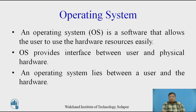An operating system is a software that allows the user to use the hardware resources easily. The hardware resources means the different input and output devices like the keyboard, the printer, and all other similar hardware devices. The operating system provides the interface between the user and the physical hardware — meaning an operating system always lies between a user and the hardware, with the user accessing all the hardware through the software called the operating system.